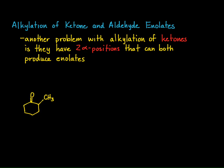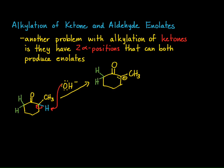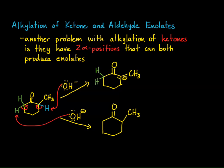Let's look at an example. Here we have methylcyclohexanone, which has two types of alpha carbons — the one on the right colored blue, and the one on the left colored green. When we go to deprotonate to form our enolate, there are two possibilities: we can get deprotonation of the alpha hydrogen on the right to form one particular enolate, or deprotonation of one of the alpha hydrogens on the left to form another enolate.